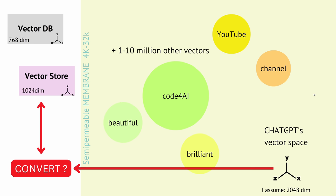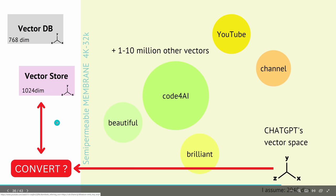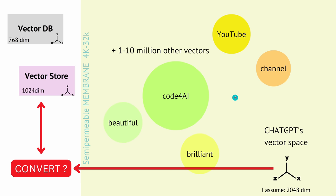Can you convert embedding vectors from, say, 2000 dimensions to 1000 dimensions? Of course — a vector space is a mathematical object and there are many formulas to reduce the dimension. I showed you UMAP for dimensionality reduction, where the information context and the relation between each vector is mostly preserved. Of course, if you lose 1000 dimensions, you lose some information content. But parametric UMAP is currently one of the best methodologies to keep the content of our vectors valid even in a lower-dimensional vector space.